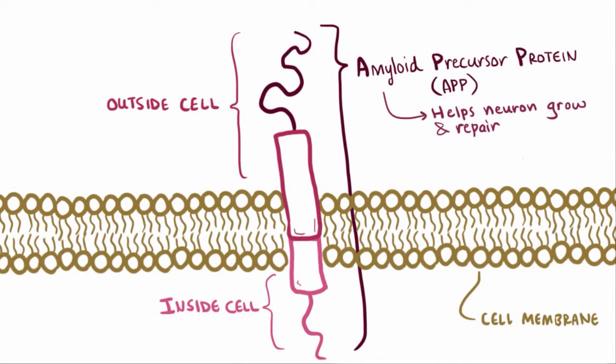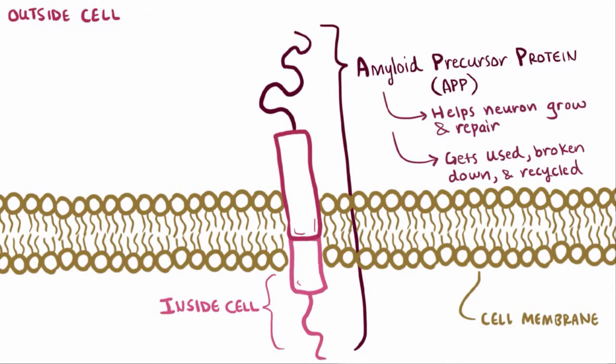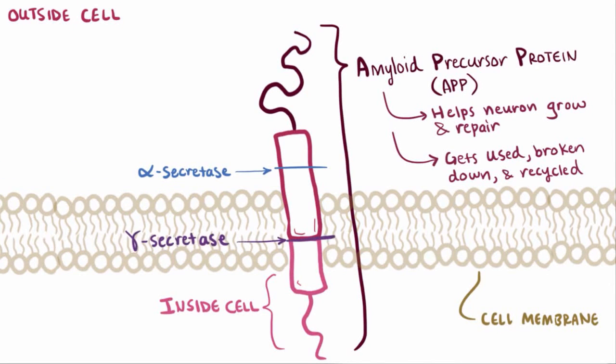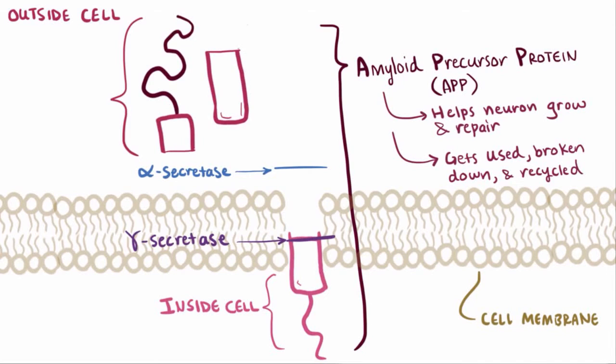Since APP is a protein, just like other proteins, it gets used and over time it gets broken down and recycled. Normally it gets chopped up by an enzyme called alpha-secretase and its buddy, gamma-secretase. This chopped up peptide is soluble and goes away and everything's all good.